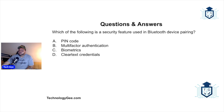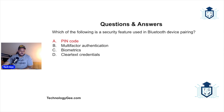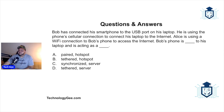Question four: Which of the following is a security feature used in Bluetooth device pairing — a PIN code, multi-factor authentication, biometrics, or clear text credentials? When you're pairing a device, like your phone to your car to hear music, the correct answer is a PIN code. You're required to enter a PIN code — often something like 0000 — to establish that Bluetooth connection.